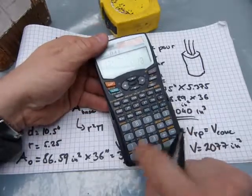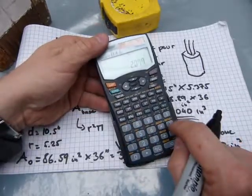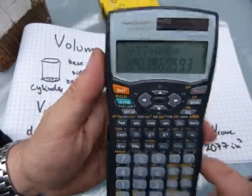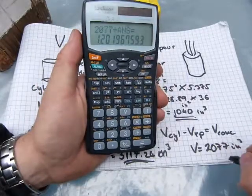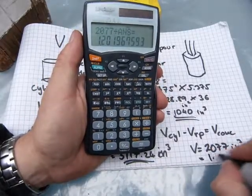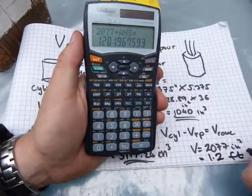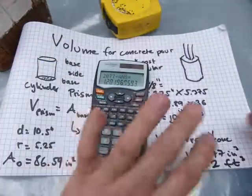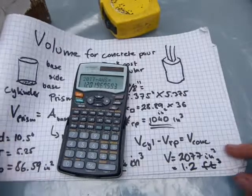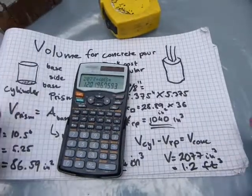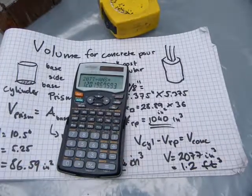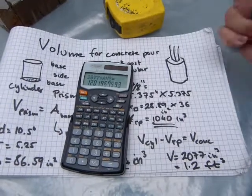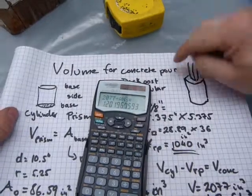Dividing 2,077 by 1,728 equals approximately 1.22 cubic feet. So that is the final answer — that's for one concrete post. We had two of these, so you need to double it: 2.4 cubic feet was the concrete needed.